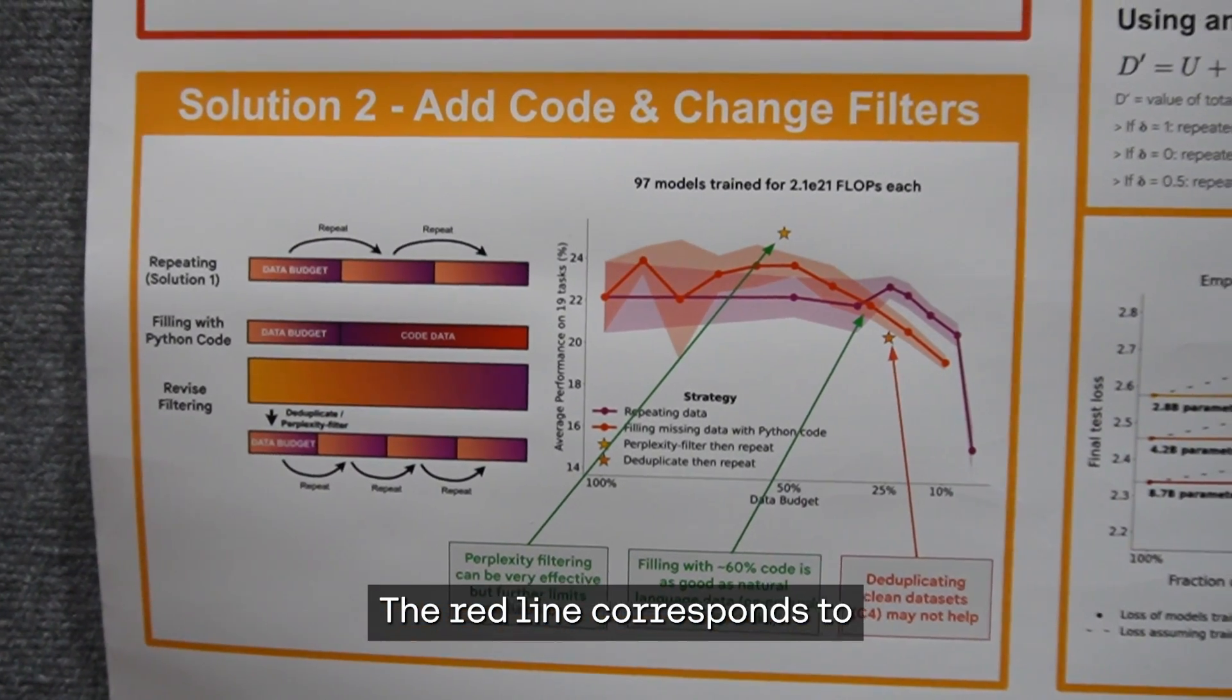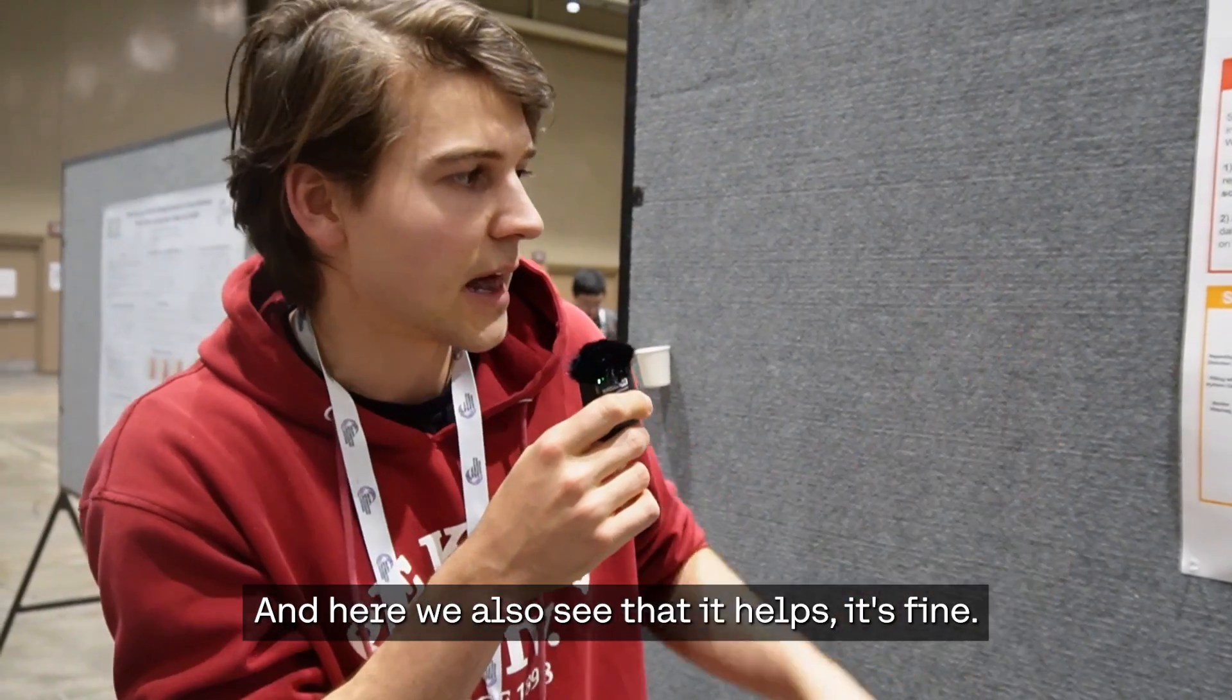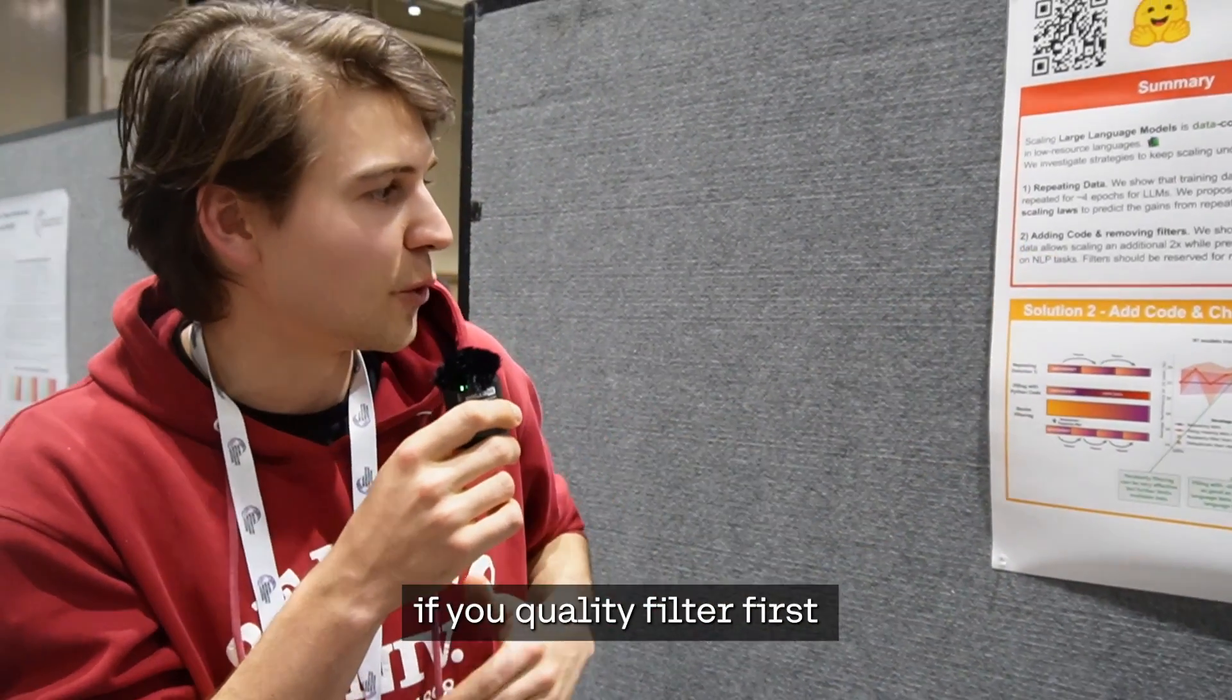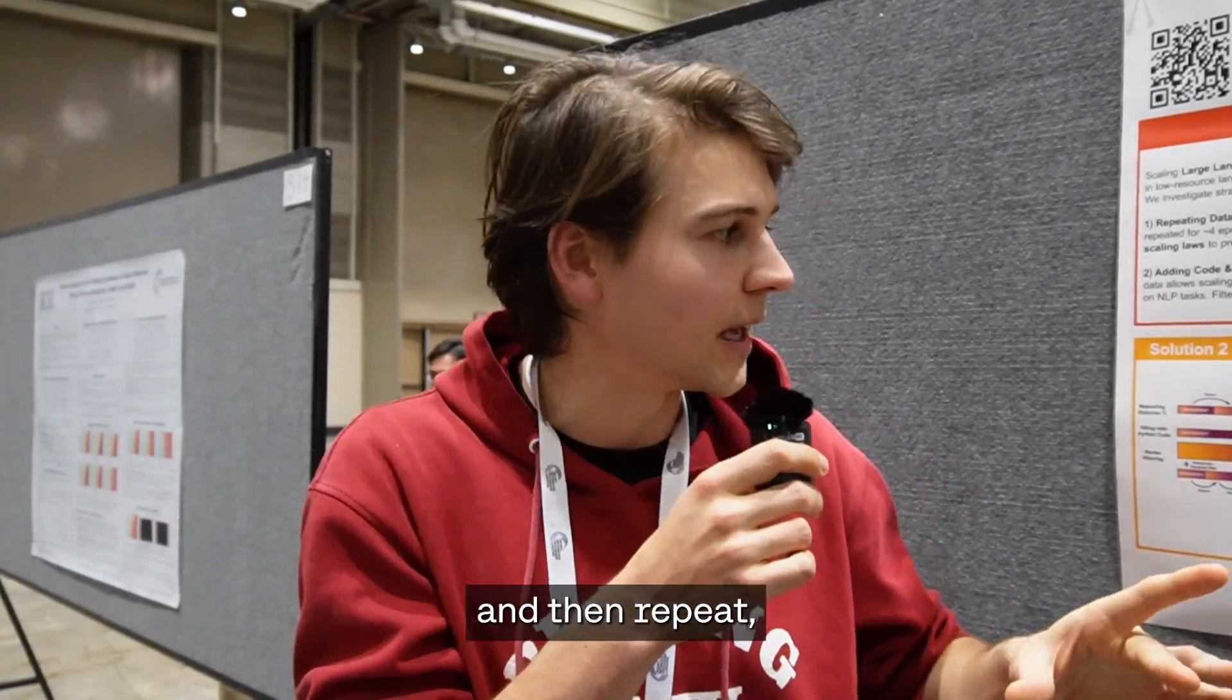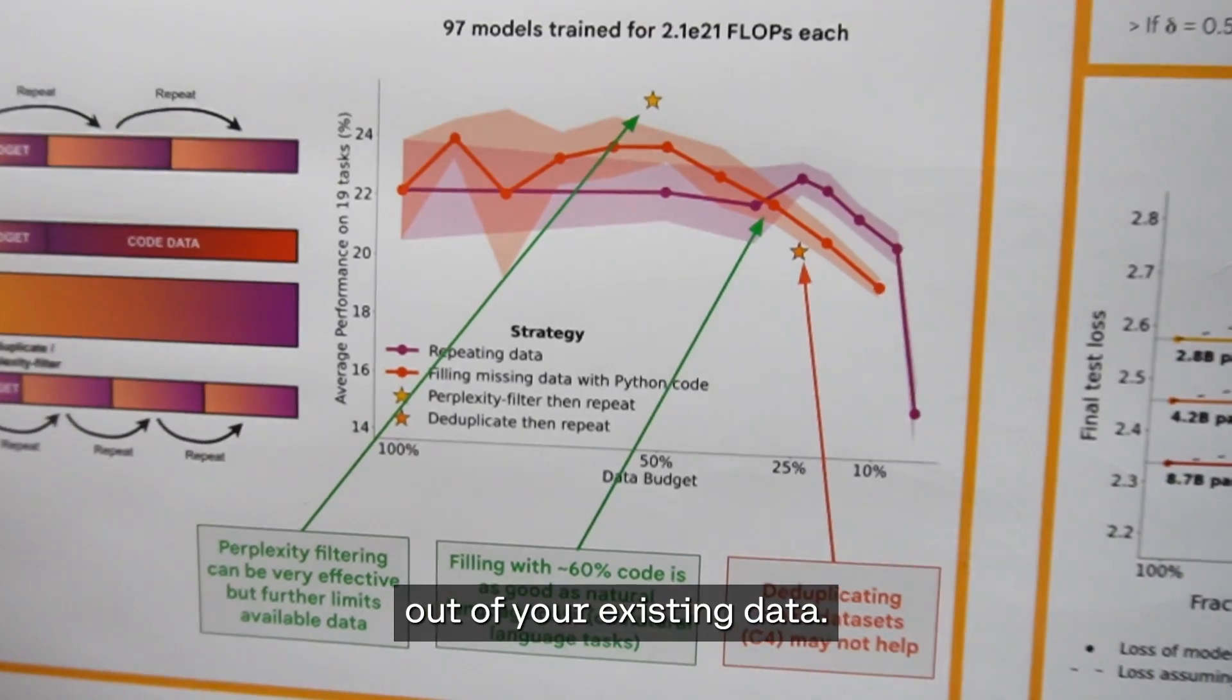The red line corresponds to filling up missing data with Python code, and here we also see that it helps. Then we find that if you quality filter first and then repeat—which is indicated by the star at the top—you can get a lot more out of your existing data.